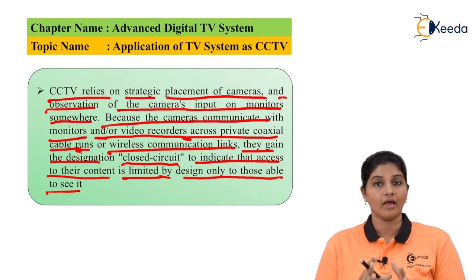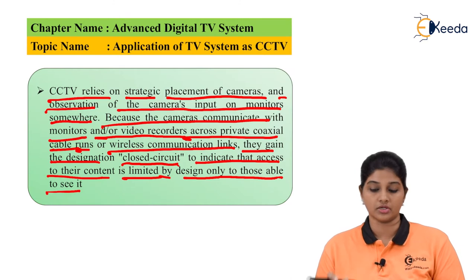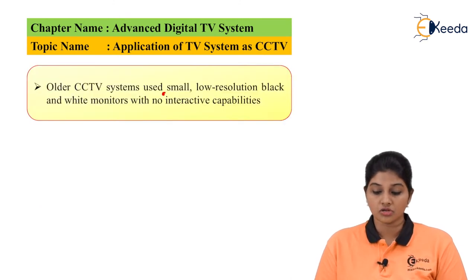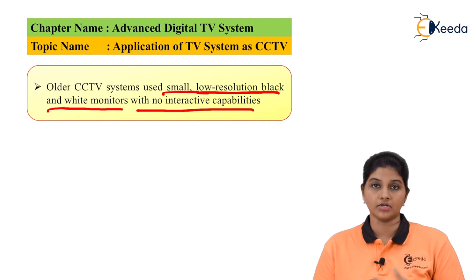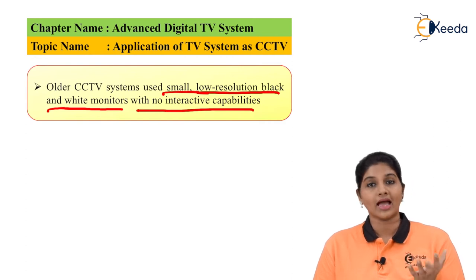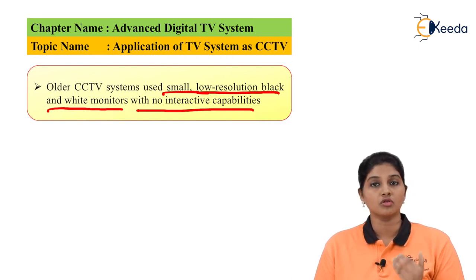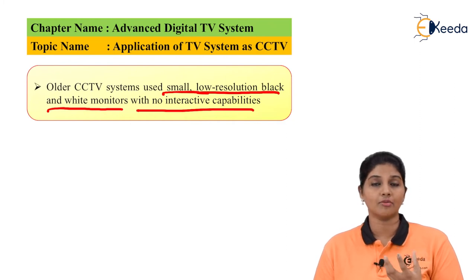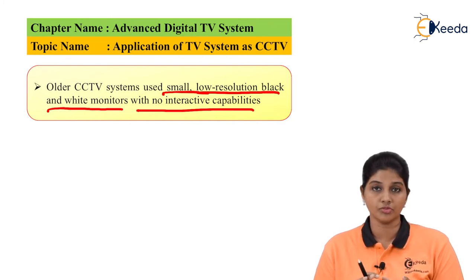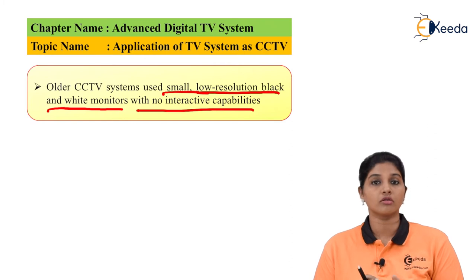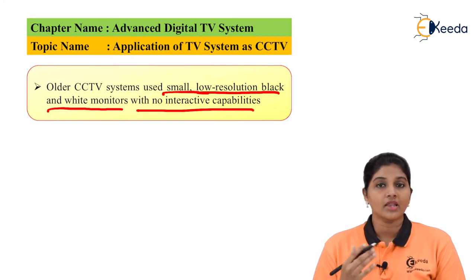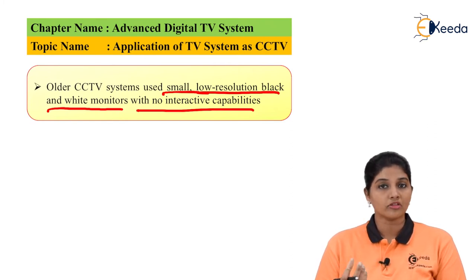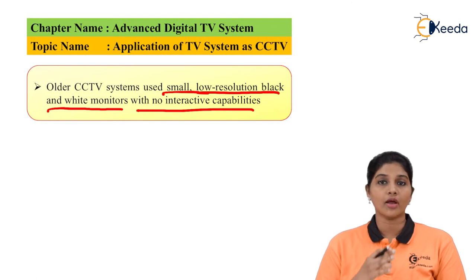The function of CCTV is to capture the details of the place where it is installed and transmit that data to a receiver, monitor, or video recorder using a coaxial cable or wireless link. That is why it is called closed circuit. Older CCTV systems used small, low-resolution black and white monitors with no interactive capabilities, but as technology advanced, modern CCTV gained the ability to zoom in on pictures and track objects.